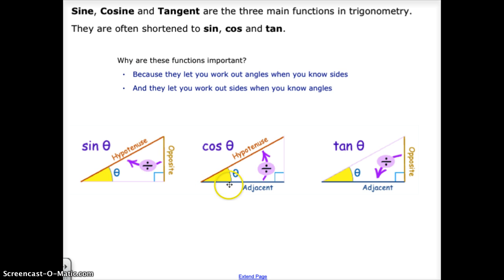Cosine would be the ratio of the adjacent and the hypotenuse. And the tangent ratio, which is what we'll discuss today, is the opposite side divided by the adjacent side.